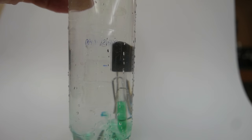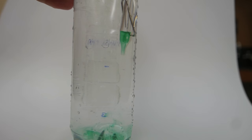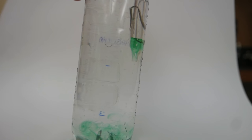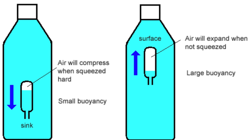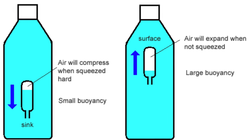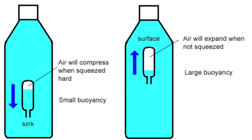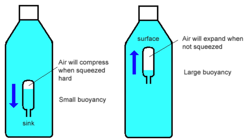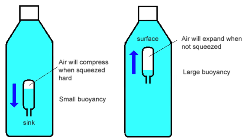The squeezing actually causes the air inside the dropper to be compressed. That means there's going to be less buoyant force than gravity, so the dropper sinks. When I release it, the air bubble gets larger, the buoyant force becomes greater than the pull of gravity, so the dropper floats. This would be part of Archimedes' principle.